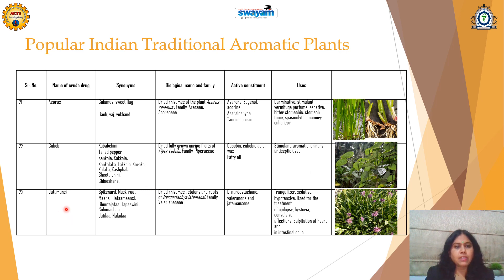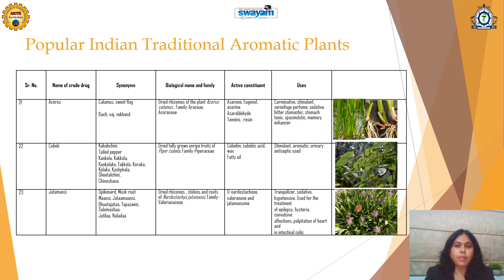Next, a very famous drug: Jatamansi, which is called as musk root, spikenard, or tapasaveni. It is a dried rhizome, stolons, and roots of Nardostachys jatamansi, Family Valerianaceae. It contains valeranone, jatamansone, and nardostalone. It is used as a tranquilizer, sedative, and hypotensive. It is useful in treatment of hysteria, epilepsy, convulsions, palpitation of the heart, and intestinal colic. Jatamansi is also found to be useful for healthy hair growth.